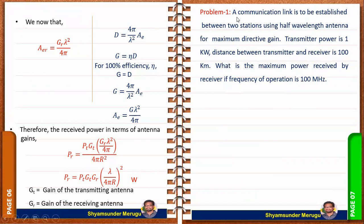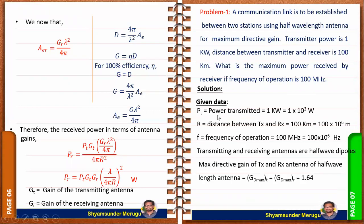A communication link is to be established between two stations using half-wavelength antennas for maximum directive gain. Transmitter power is 1 kW. Distance between transmitter and receiver is 100 km. What is the maximum power received by the receiver if the frequency of operation is 100 MHz? For half-wave dipoles, the maximum directive gain is 1.64.